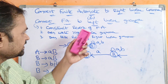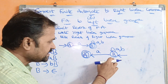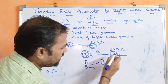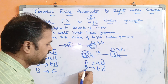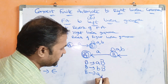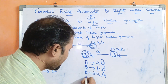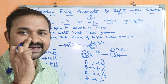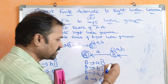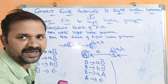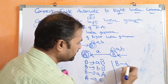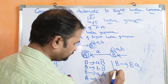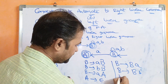The second step: write right linear grammar on the reversed finite automata. The initial state is now b. B on 'a' stays at b, so B → aB. B on 'b' stays at b, so B → bB. B on 'a' goes to a, so B → aA. Since a is the final state in the reversed automata, we write A → ε.